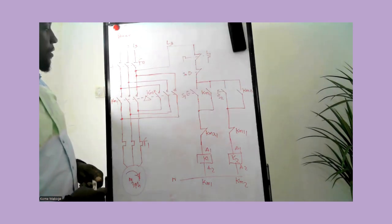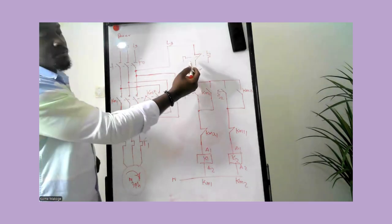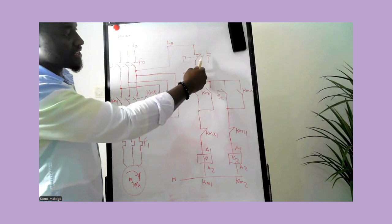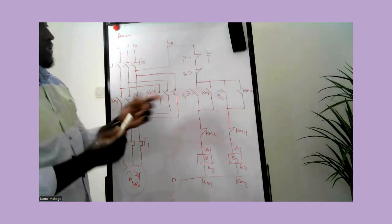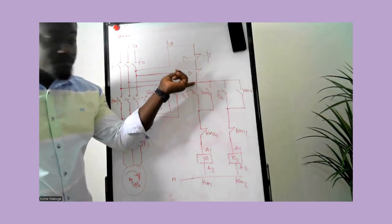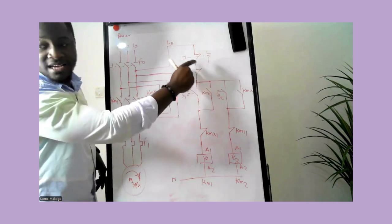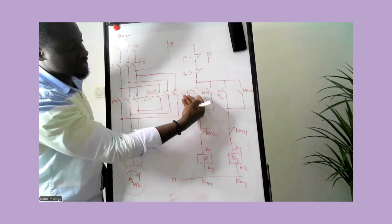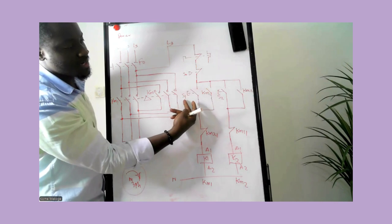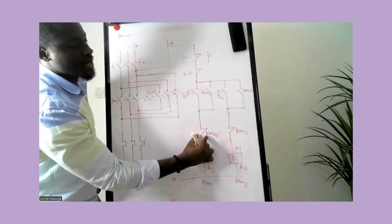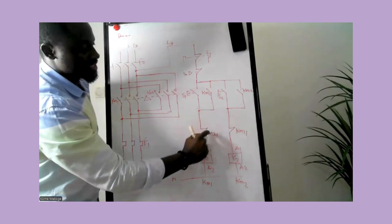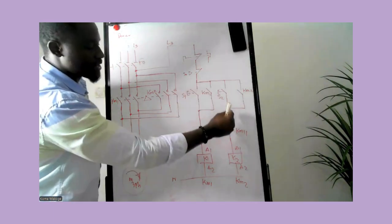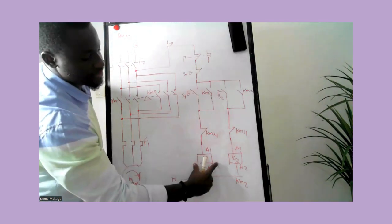We start from the top — this is our thermal relay, the same as we had on the direct online starter. The next is a close contact which is the stop push button, represented as a close contact. Next is the start push button, represented as an open contact which is S1, and then we have a close contact of KM2. As we continue I'll explain why we use the close contact of KM2.